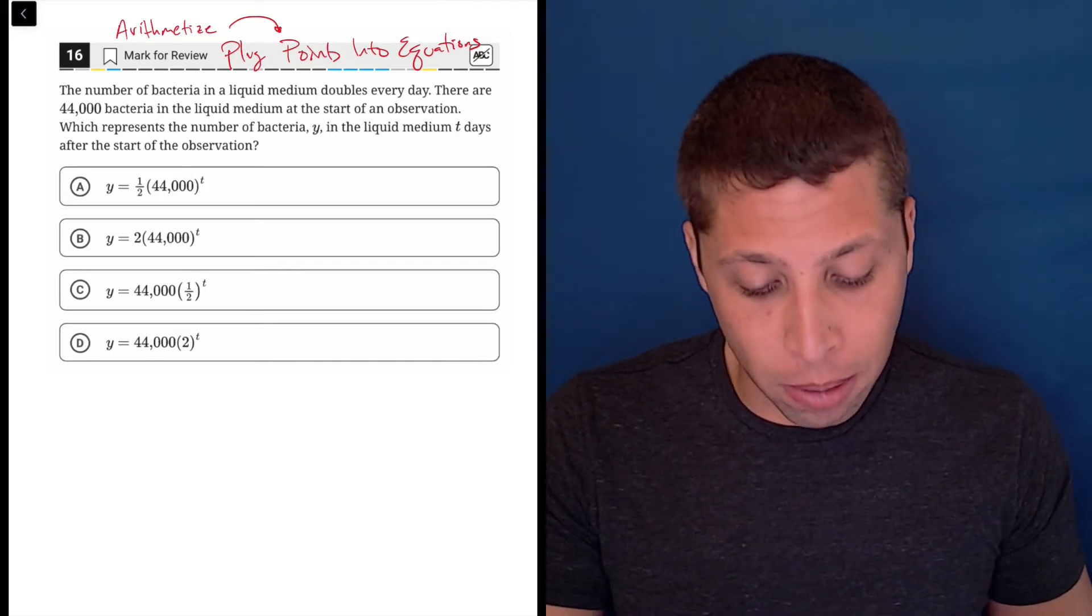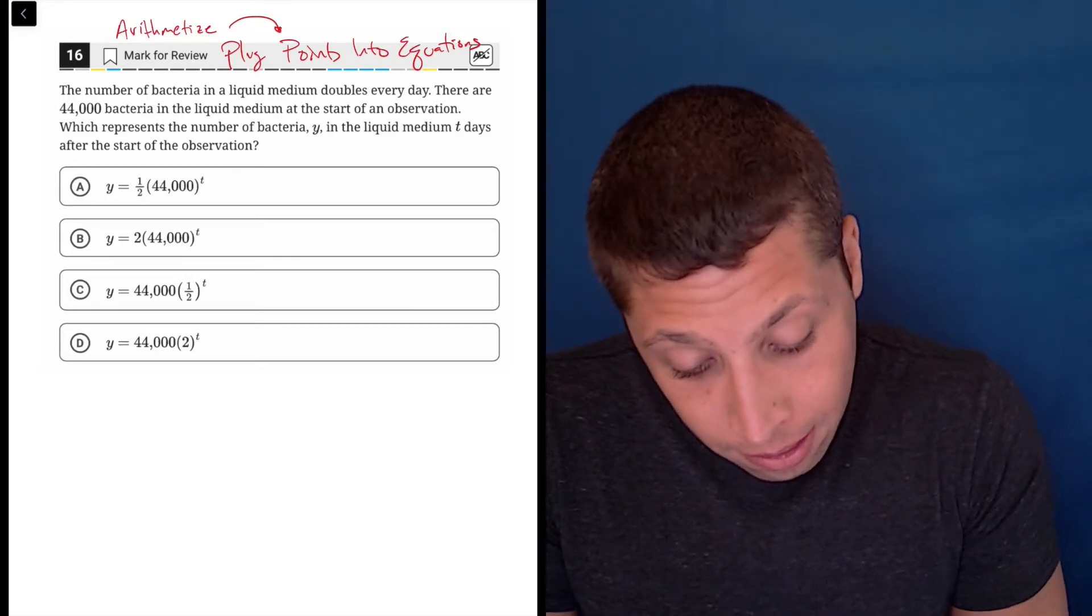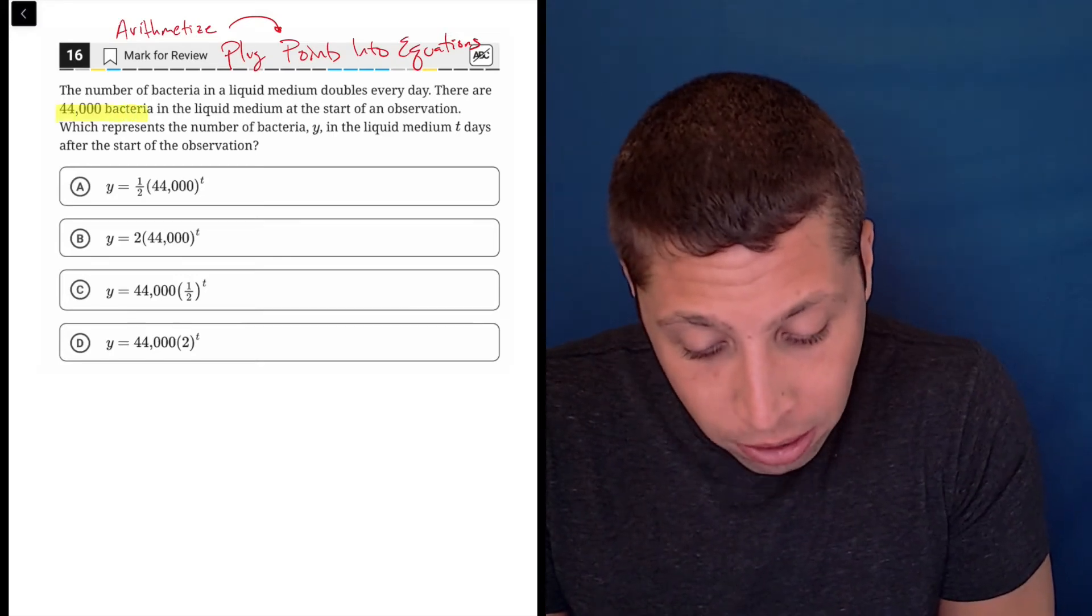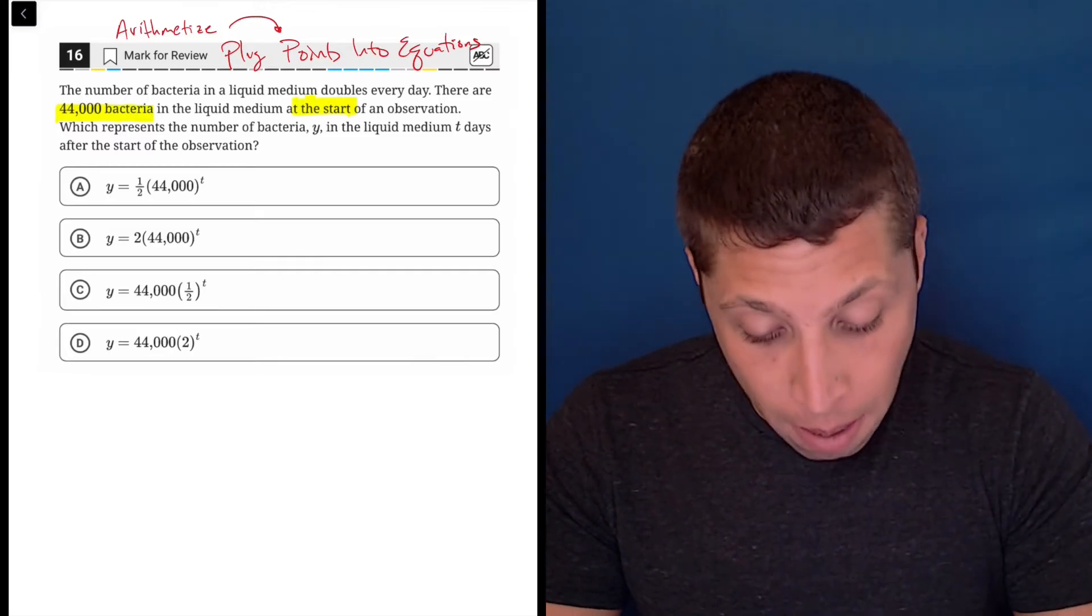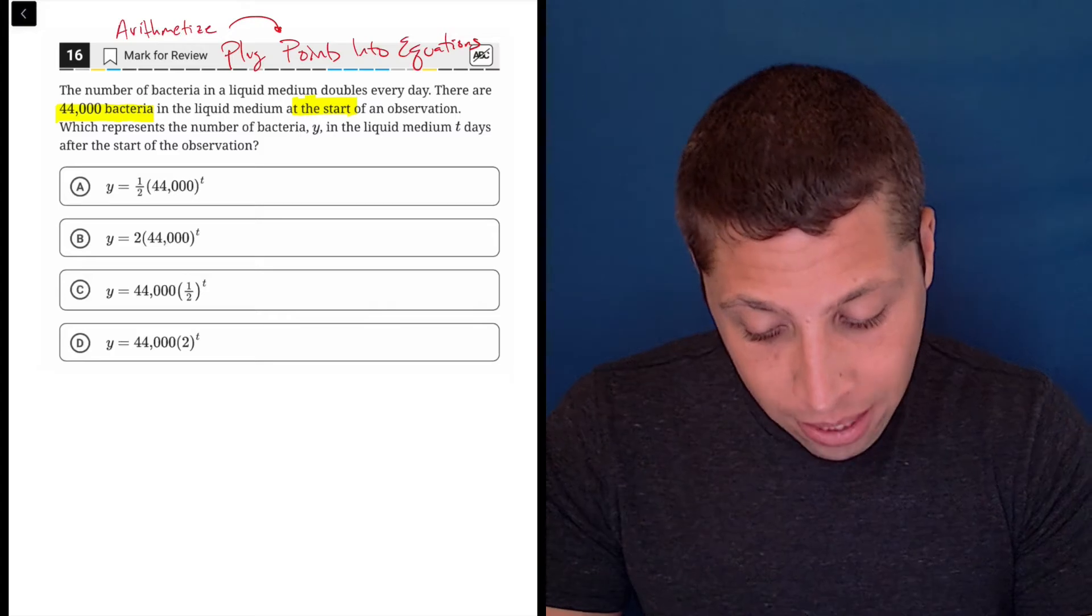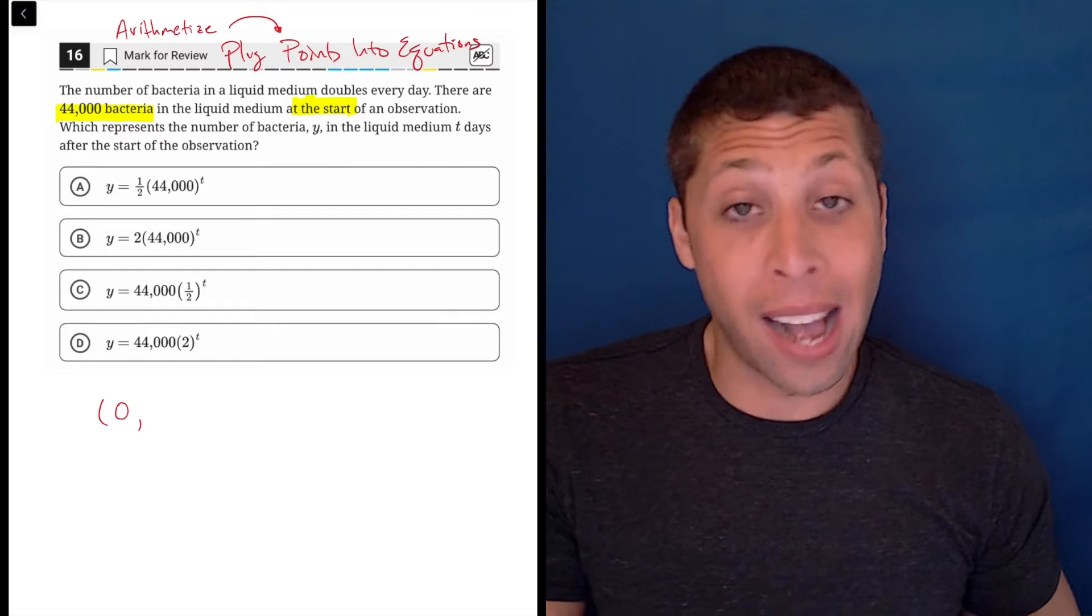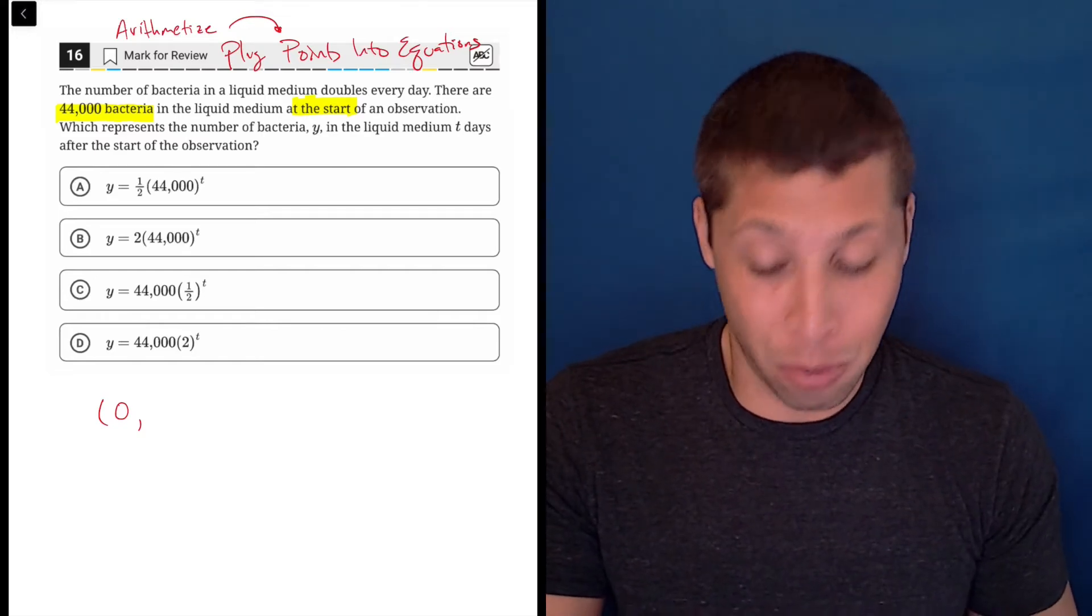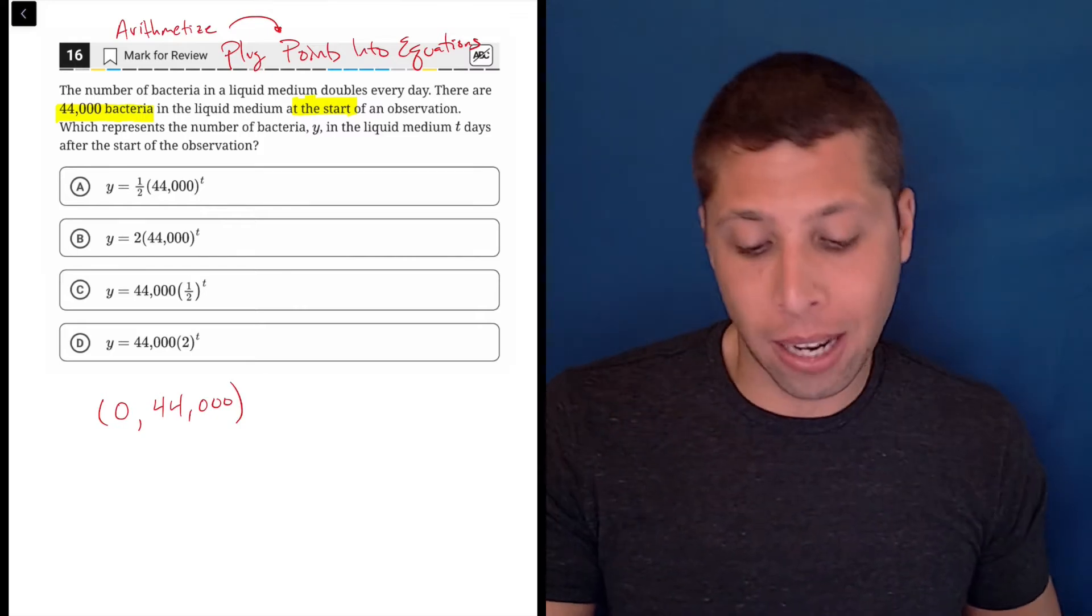The number of bacteria in a liquid medium doubles every day. There are, let me highlight this, 44,000 bacteria at the start of the observation. So that's a point. Because the T represents the number of days after the start. So when we have no days past at the zero point, the starting point, we know that there are supposed to be 44,000 bacteria.